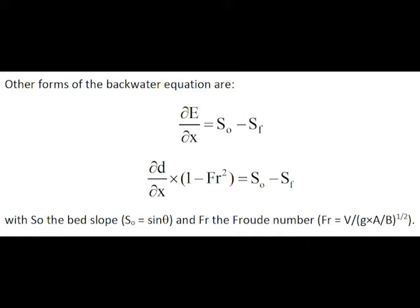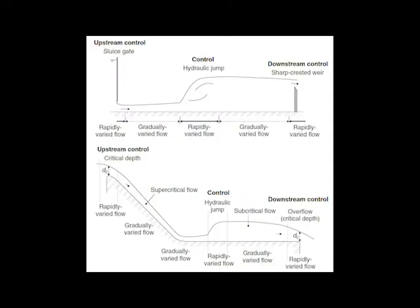The backwater equation has two singularities: critical flow condition and uniform equilibrium flow. Thus, the backwater calculation should only be conducted if it is known beforehand that critical flow conditions do not take place anywhere along the reach of the channel. Similarly, it should not be applied to rapidly varied flow, such as hydraulic jumps and gates.